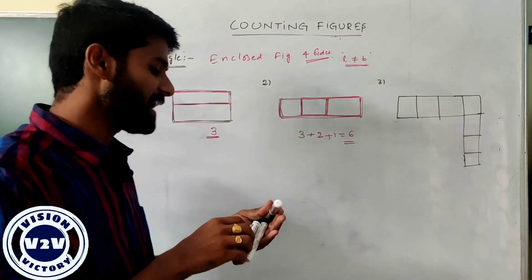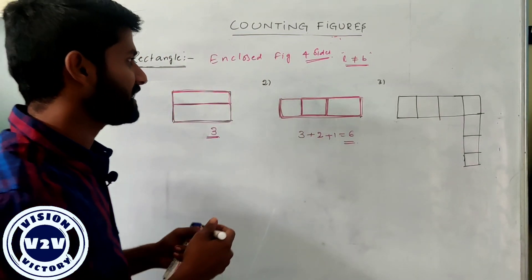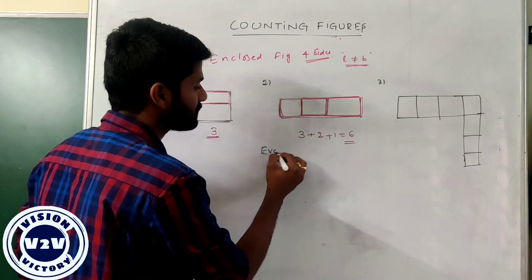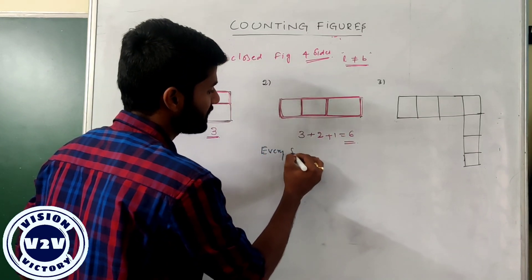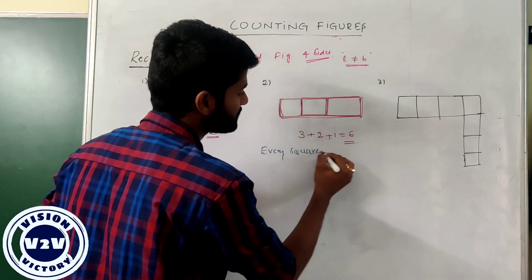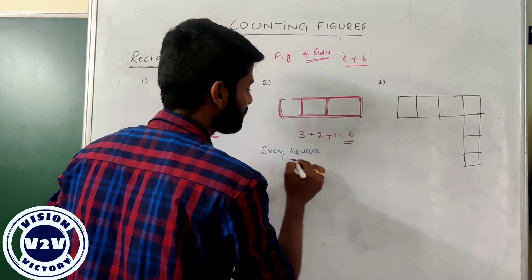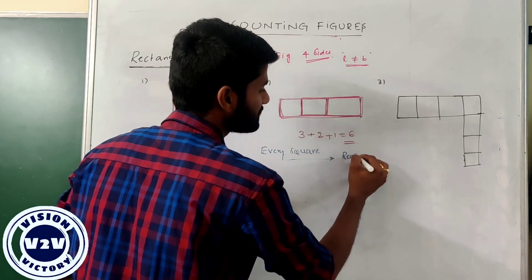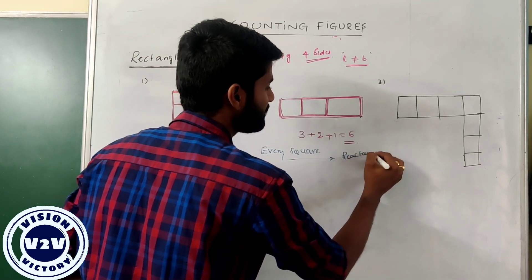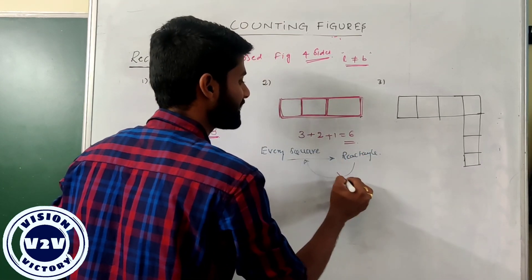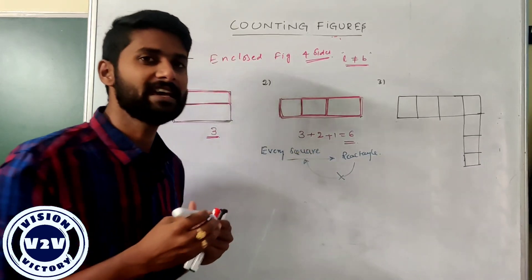We have an important property: every square box can be defined as a rectangle. So a square can be defined as a rectangle, but a rectangle cannot be defined as a square. That is the property.